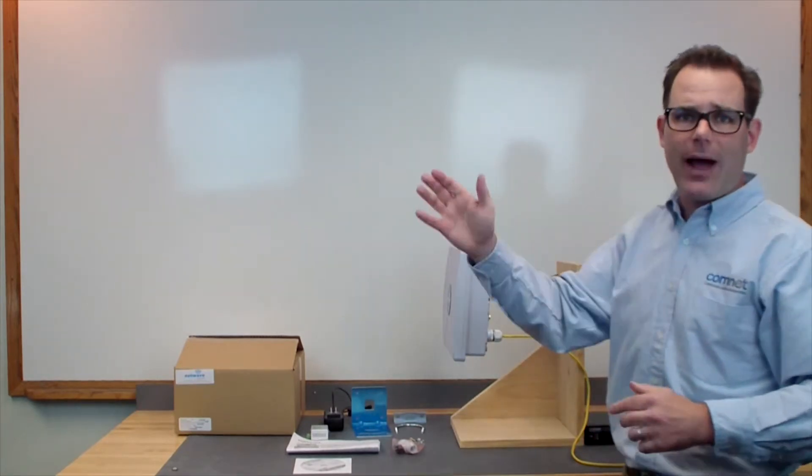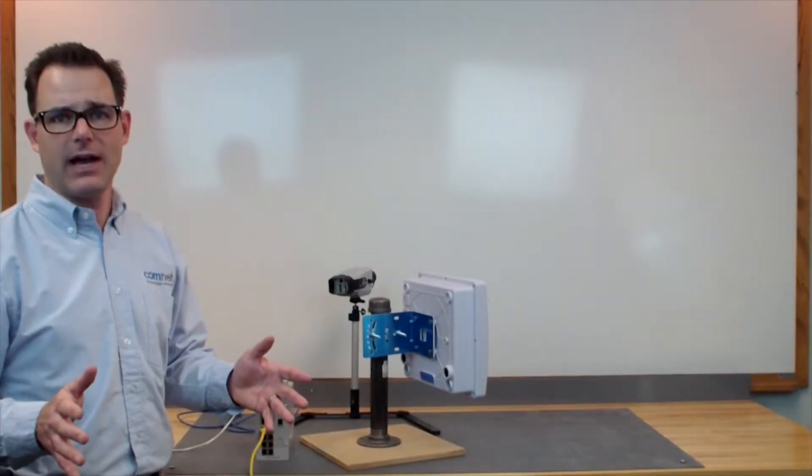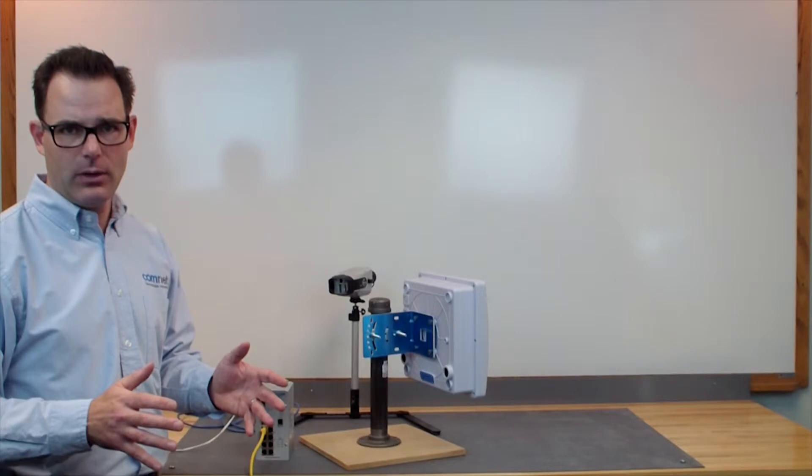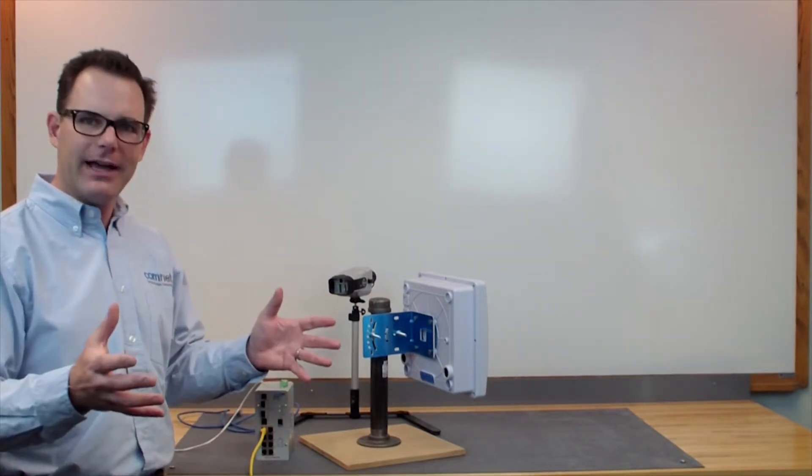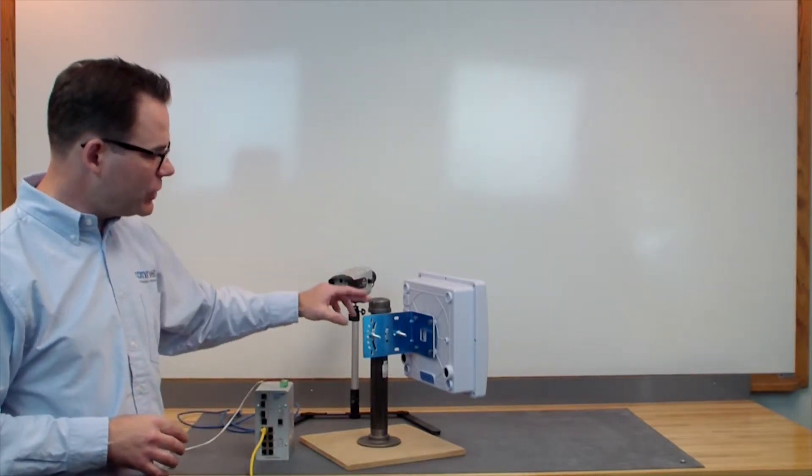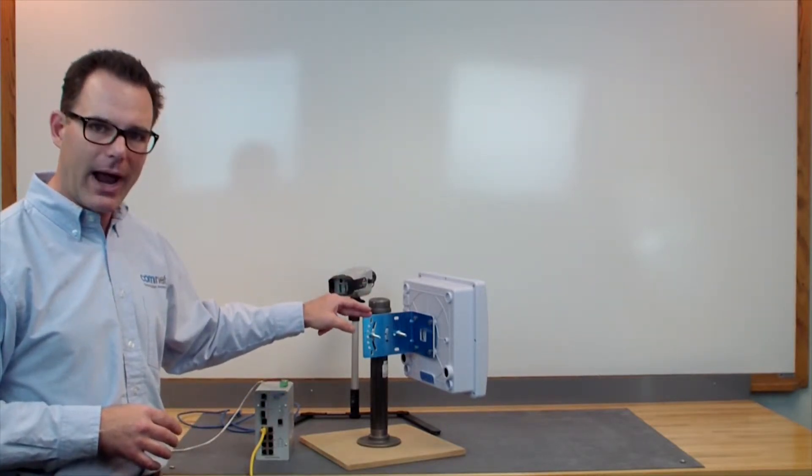Now we're outside at the remote camera location ready to install the client radio. So we've taken our box labeled client and has the same contents as the other box in it. In this case we're actually using the included pole mounted bracket.